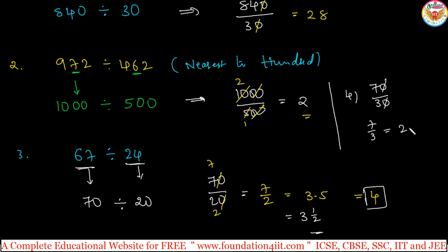7 divided by 3. 7 by 3 is 2 1 by 3. So 2.33 will get. So 2.33 and so on. That is only 2, because after the decimal it is less than 5. So we can neglect that to nearest to the units place. We can make this in this way.